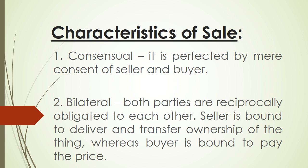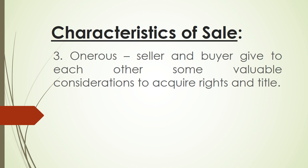The second characteristic of sale is that it is bilateral. When you say bilateral, not only one of the parties but both of them are obligated to each other. The seller is bound to deliver and transfer ownership of the object, while the buyer is bound to pay the purchase price. The third characteristic is that sale is onerous, meaning the seller and the buyer give to each other some valuable considerations to acquire their respective rights and title.